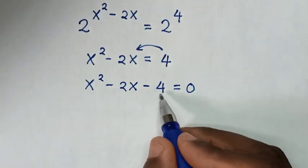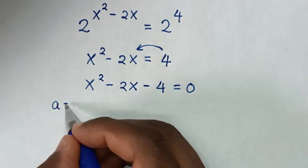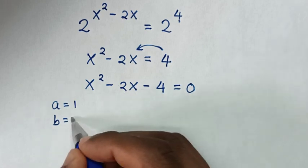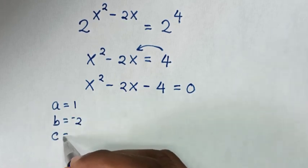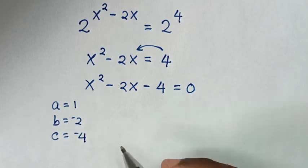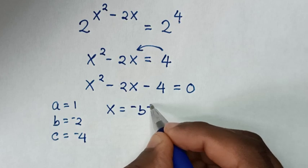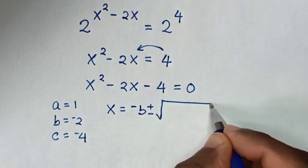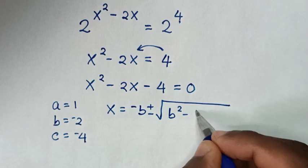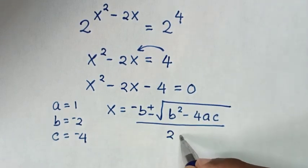Now from this quadratic equation, a is equal to 1, b is equal to negative 2, c is equal to negative 4. Then from the quadratic formula, x is equal to negative b plus or minus square root of b squared minus 4ac, over 2a.